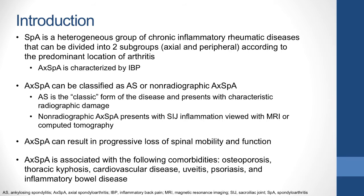If left untreated, axial SPA can result in progressive loss of spinal mobility and function. Additionally, several comorbidities—including osteoporosis, thoracic kyphosis, cardiovascular disease, uveitis, psoriasis, and inflammatory bowel disease—can affect the ability of patients to function physically.